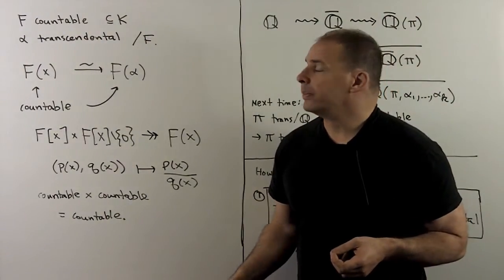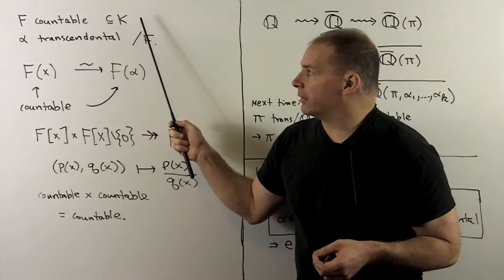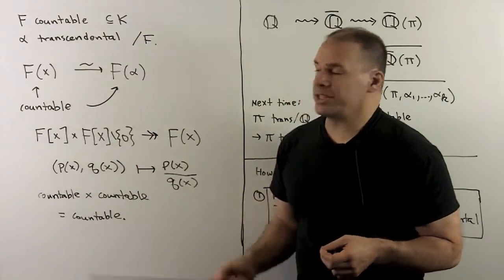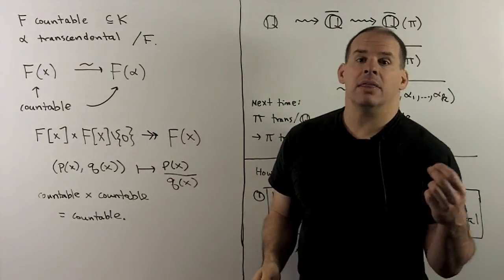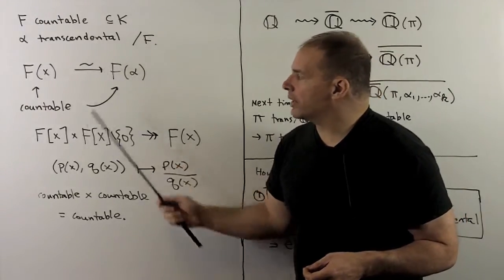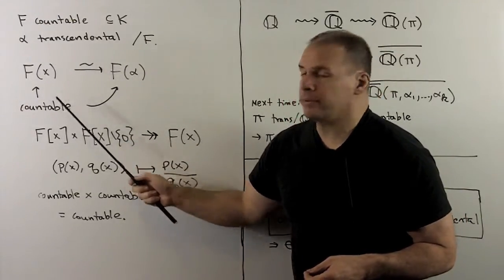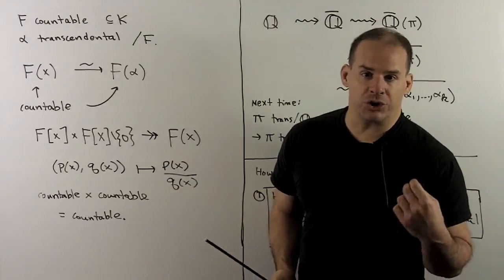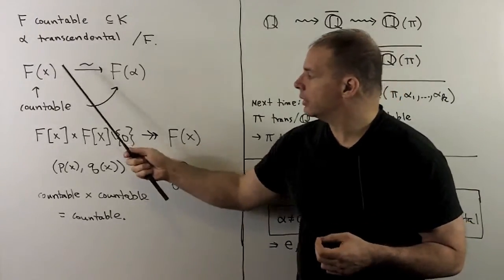We work in general. If f is a countable subfield of k, alpha is a transcendental over f, then the subfield generated by f and alpha is field isomorphic to the rational functions over f. So let's show that the rational functions are countable.